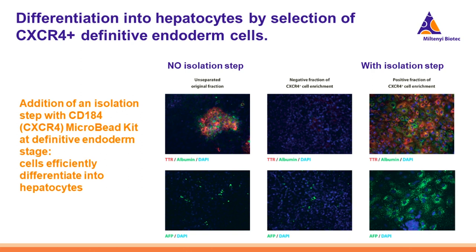We therefore modified the original protocol by including an isolation step for definitive endoderm using the CD184 MicroBead Kit. By comparing expression of hepatocyte markers in cells obtained without and with the isolation step, it is clear that the latter shows higher expression of hepatocyte markers. Importantly, the same isolation strategy can be used for other cell types that derive from the definitive endoderm.